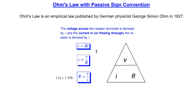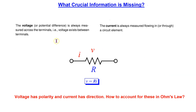This basic form of Ohm's law is seldom used directly in electrical and electronic engineering. Recall that voltage is always measured across the terminals of a circuit element, so the voltage has a polarity. Similarly, the current is always measured flowing through a circuit element, so the current has a direction. The basic form of Ohm's law does not take the voltage polarity and the current direction into account.